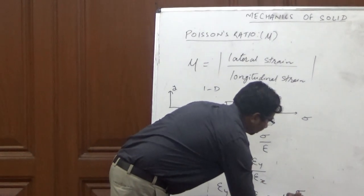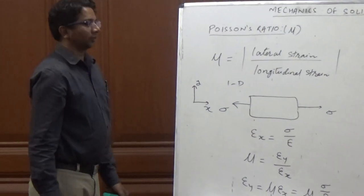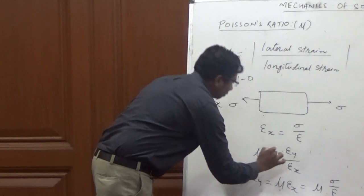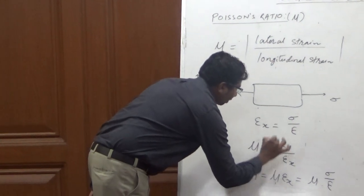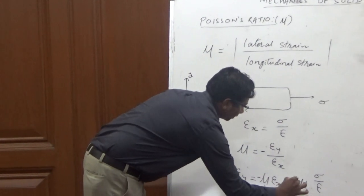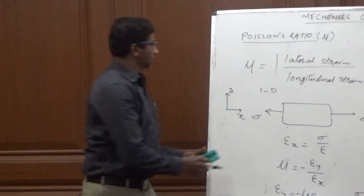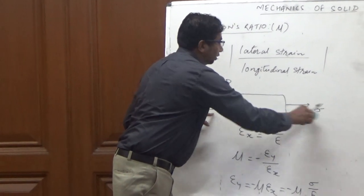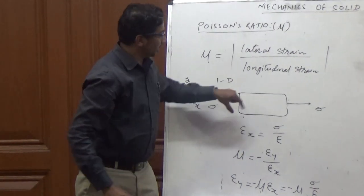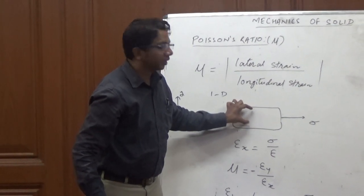So we can write epsilon y equals mu times sigma x over E. And because we have taken the modulus, this term may be negative — and it is negative, so it is minus mu times sigma x over E. Because in the x-direction the length increases, in the lateral direction it decreases.